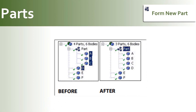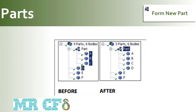When forming new parts, you should be aware that some bodies will change their part ID. The Form New Part operation will choose a part ID that minimizes the number of bodies that must switch their part ID. Sometimes it will use an existing part, while at other times it creates a new part. When a new part is created, the ANSYS DesignModeler application will place it at the bottom of the feature tree outline and number them sequentially, beginning with Part, then Part 2, Part 3, etc.